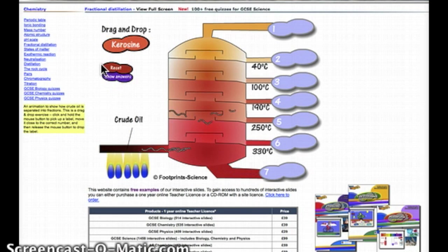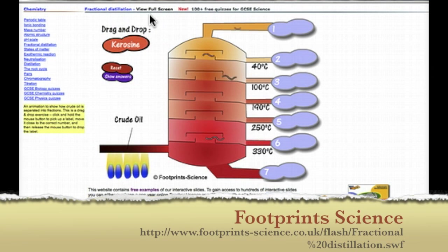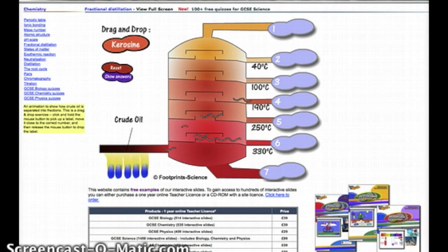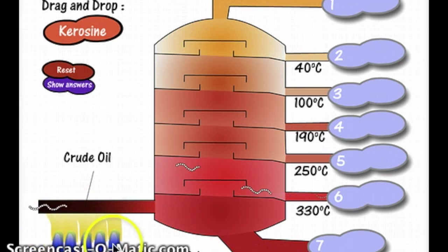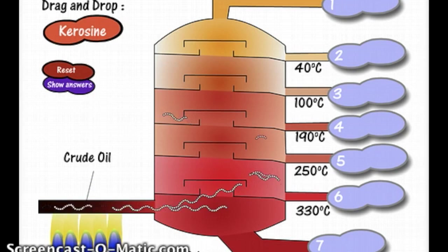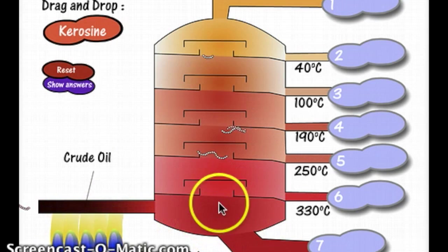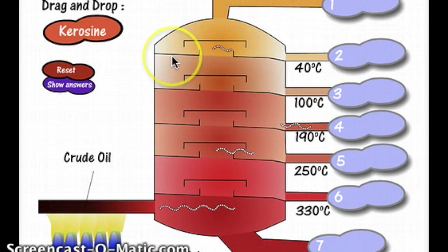This is really important because if we start to think about fractional distillation - here's another brilliant animation if you Google fractional distillation Footprint Science - they show you what happens in a fractionating column. Down here we've got some heat. Because we're heating this at the bottom, it's hotter at the bottom than at the top.